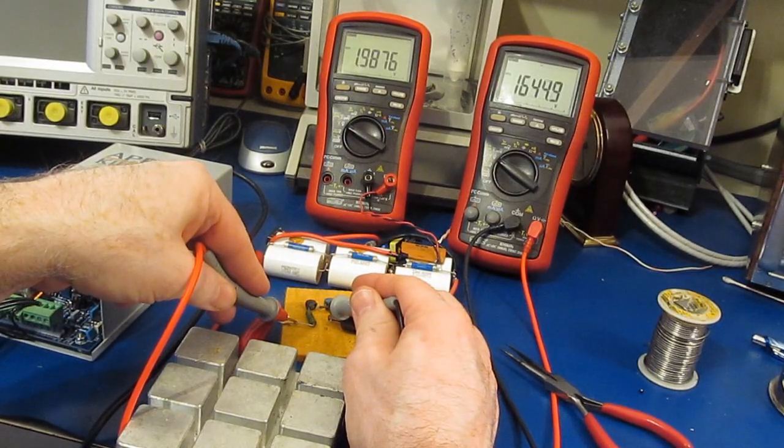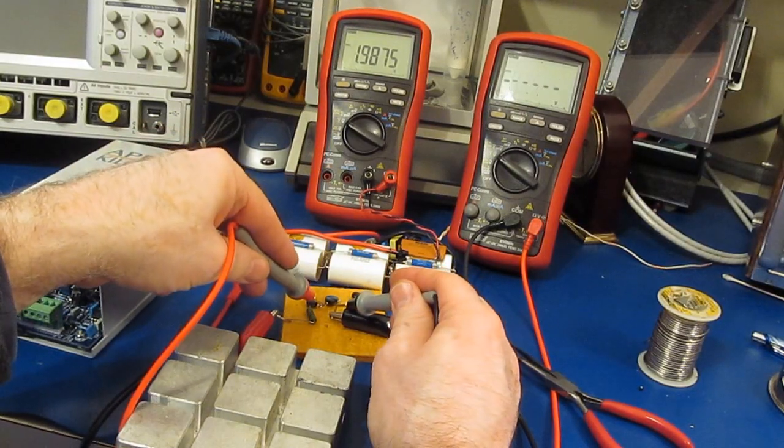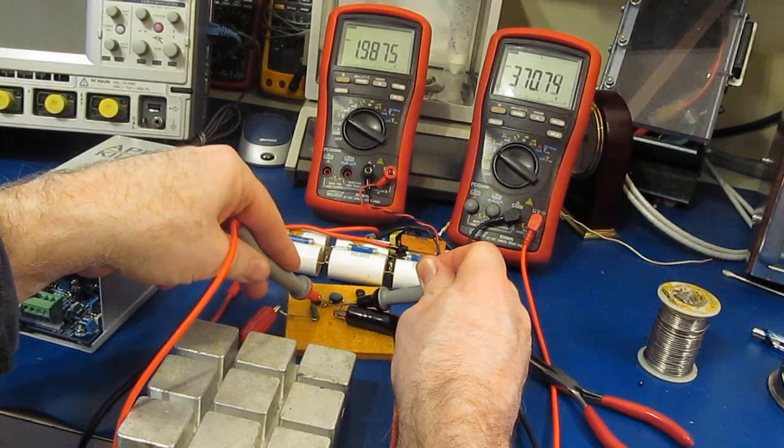You can see about 1,600 volts or so. The rest of this is being dropped across our MOV, about 370 volts or so.